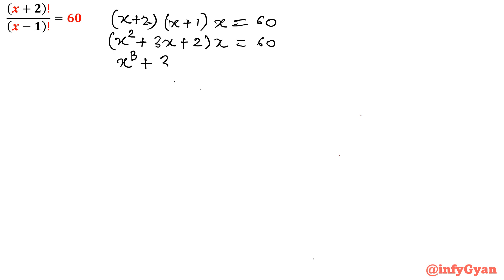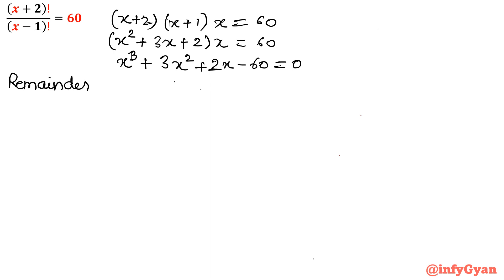Multiplying through: x³ + 3x² + 2x - 60 = 0. This is our cubic equation, and we have to solve for the value of x. I am going to solve this equation by the remainder theorem. We have seen in one or two of my previous videos what the remainder theorem is and how it can be applied to cubic or degree-four polynomials.